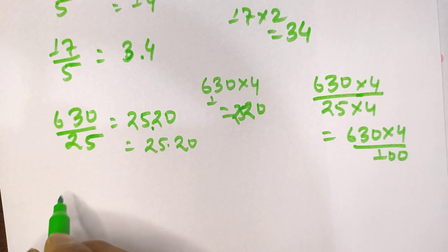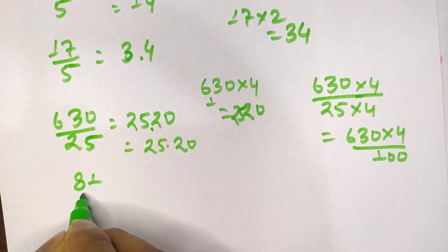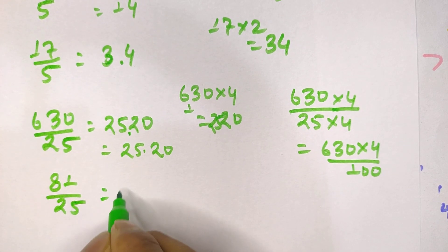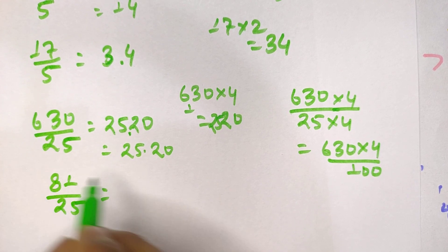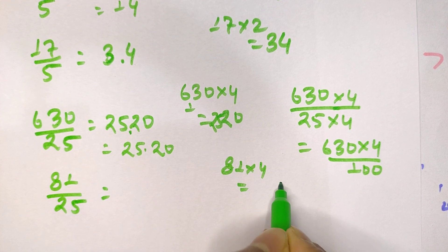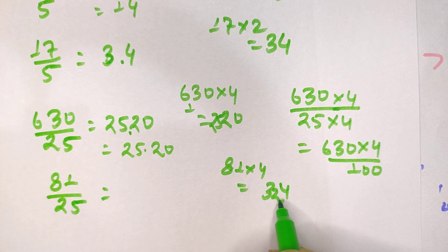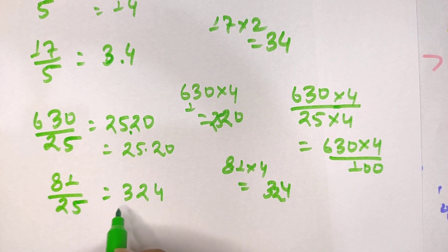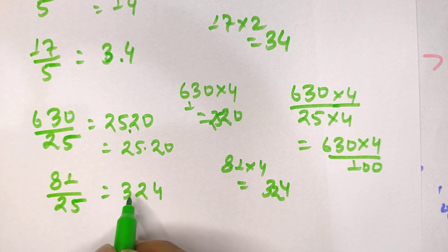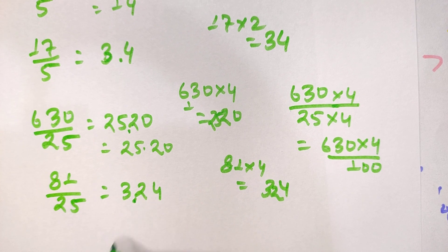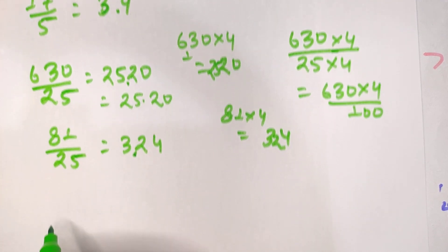Similarly, let's try 81 divided by 25. We multiply the numerator by 4: 81 times 4 equals 324. Then we place a decimal point after two digits from the last, so the answer is 3.24.